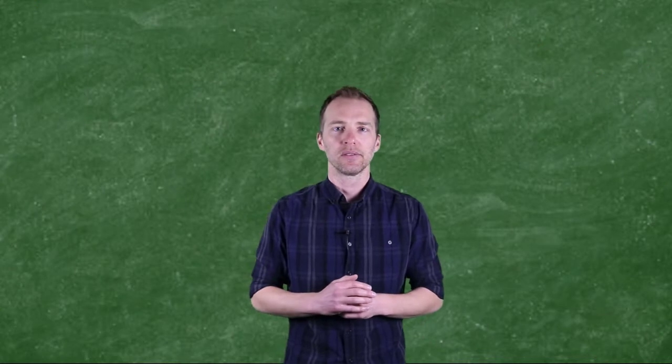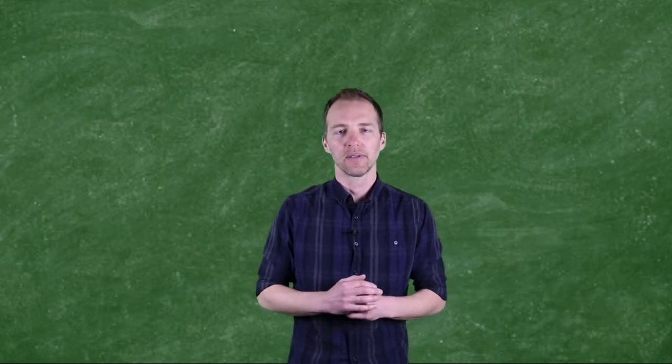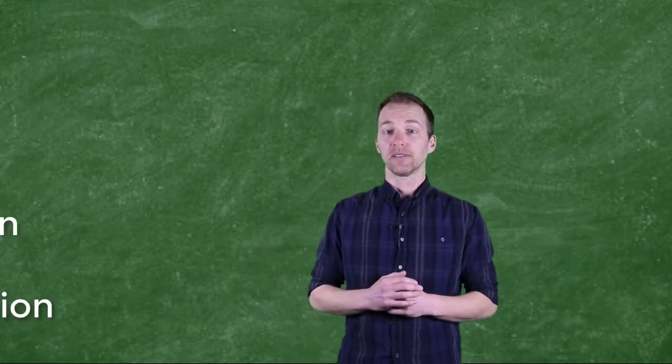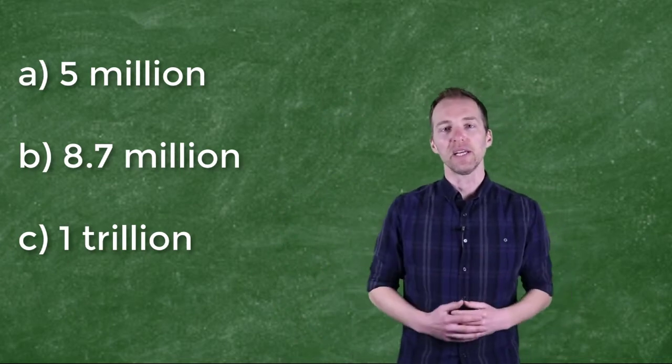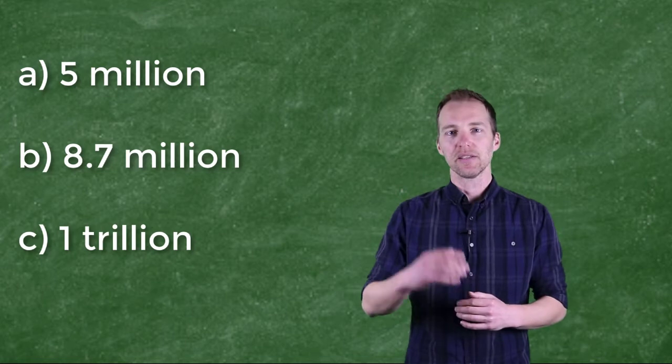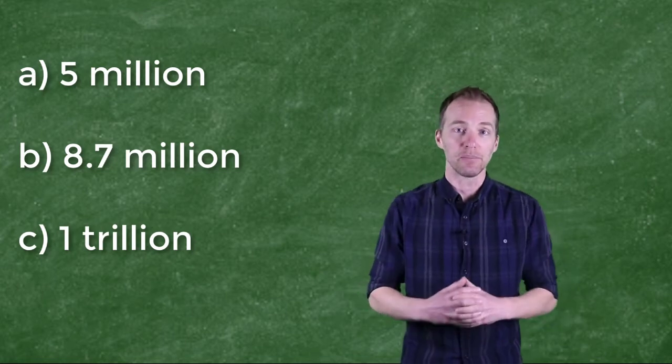But we have characterized or classified almost two million different living things. But then the question could be extended to how many living things do we actually believe there are, characterized or otherwise? Well, here's a choice. You've got three numbers over here. Which one of these do you think is the one that we currently believe to be the most accurate?